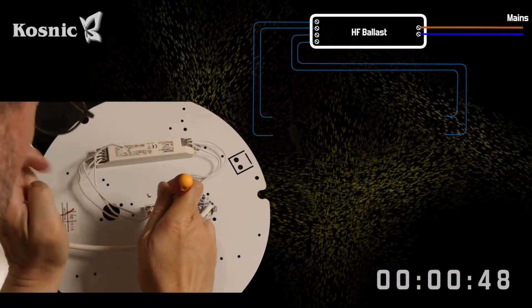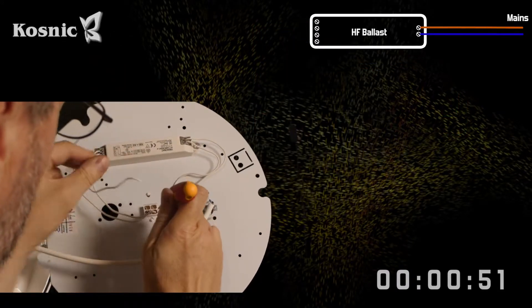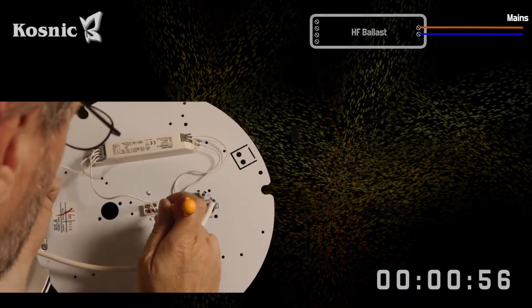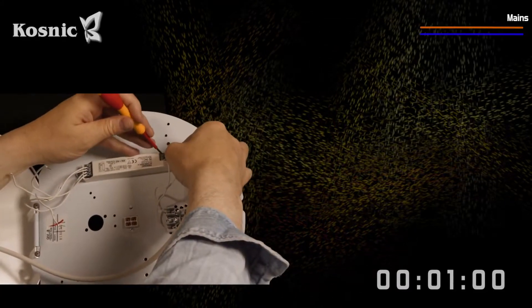Here we see the high frequency ballast and its four connections to the CFL. We remove these. Now we look at the incoming mains connections.